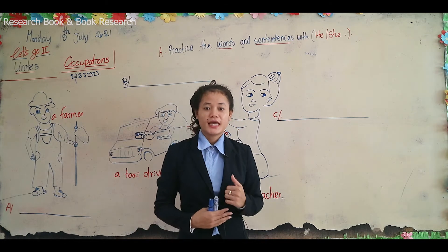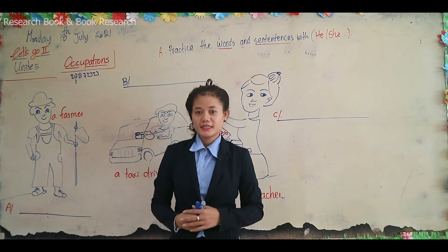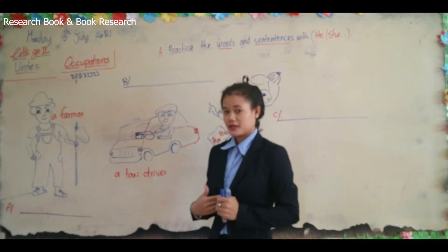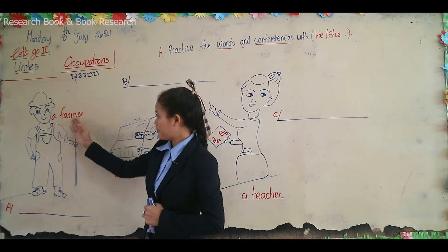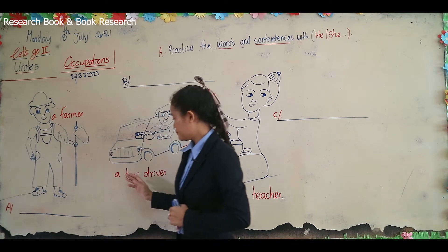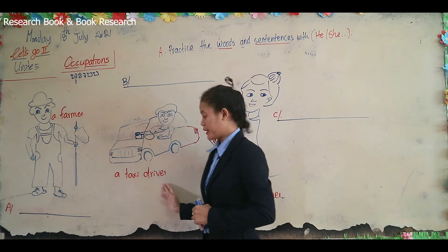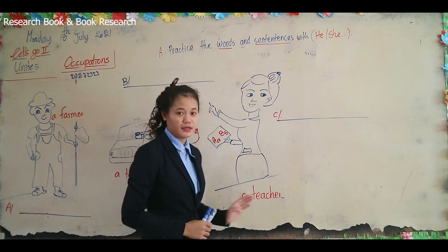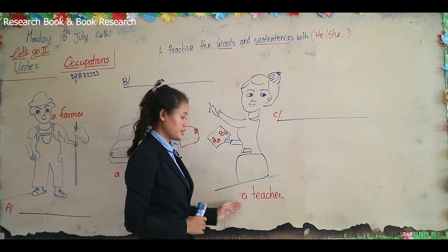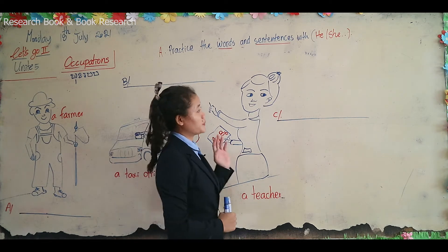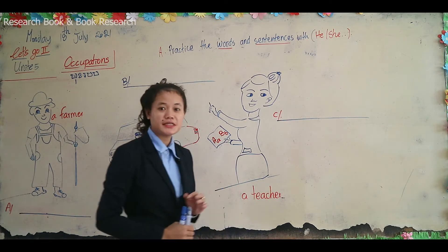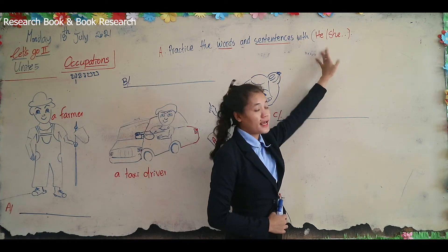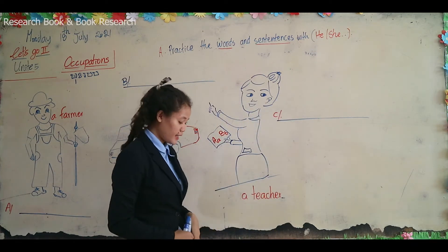Before we practice the sentences, let's read the words again: a farmer, a taxi driver, a teacher. Now we are going to practice the sentences with the subjects 'he' and 'she'.